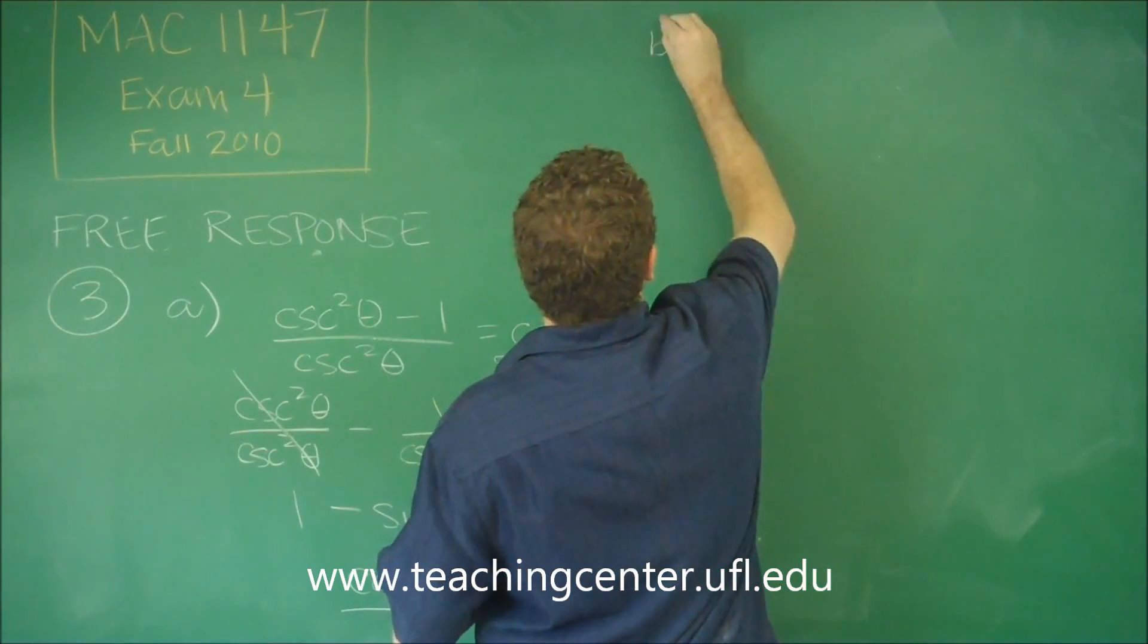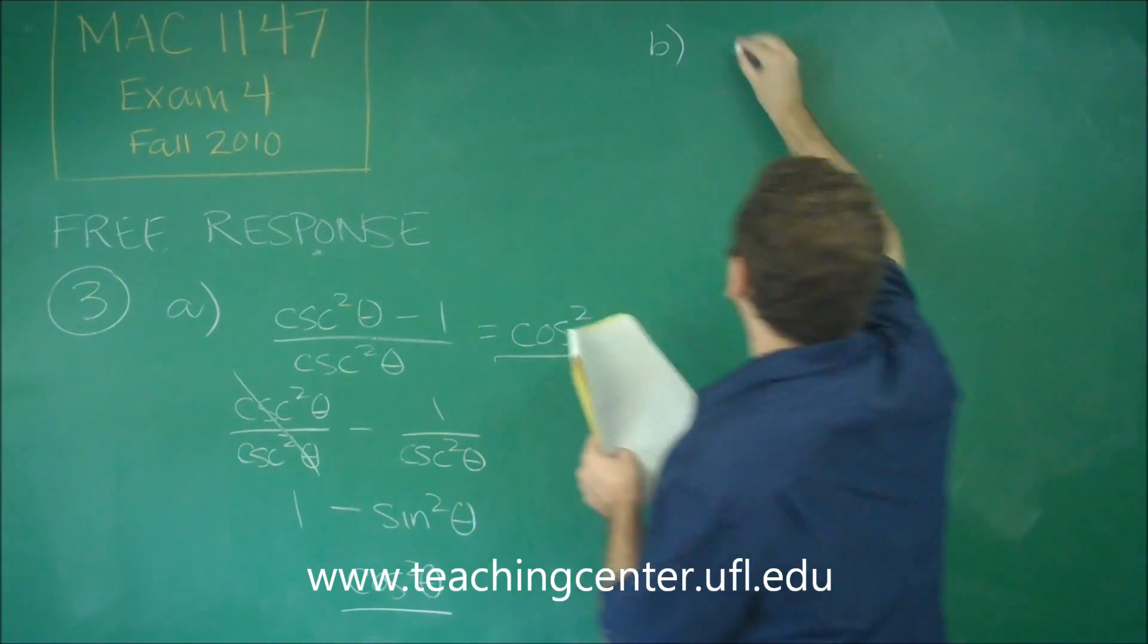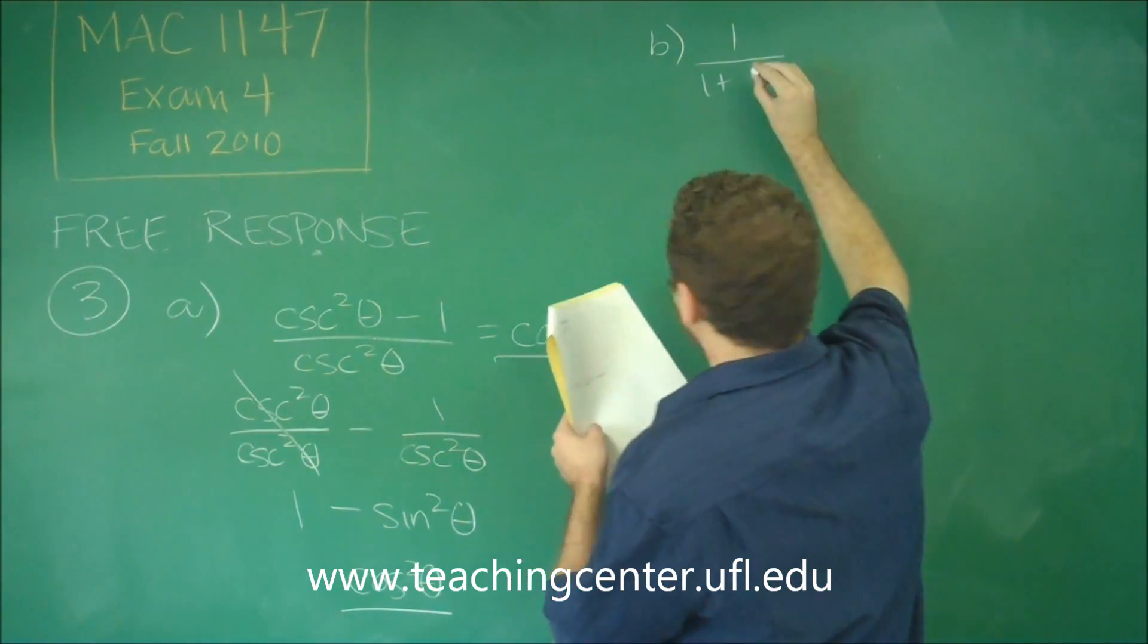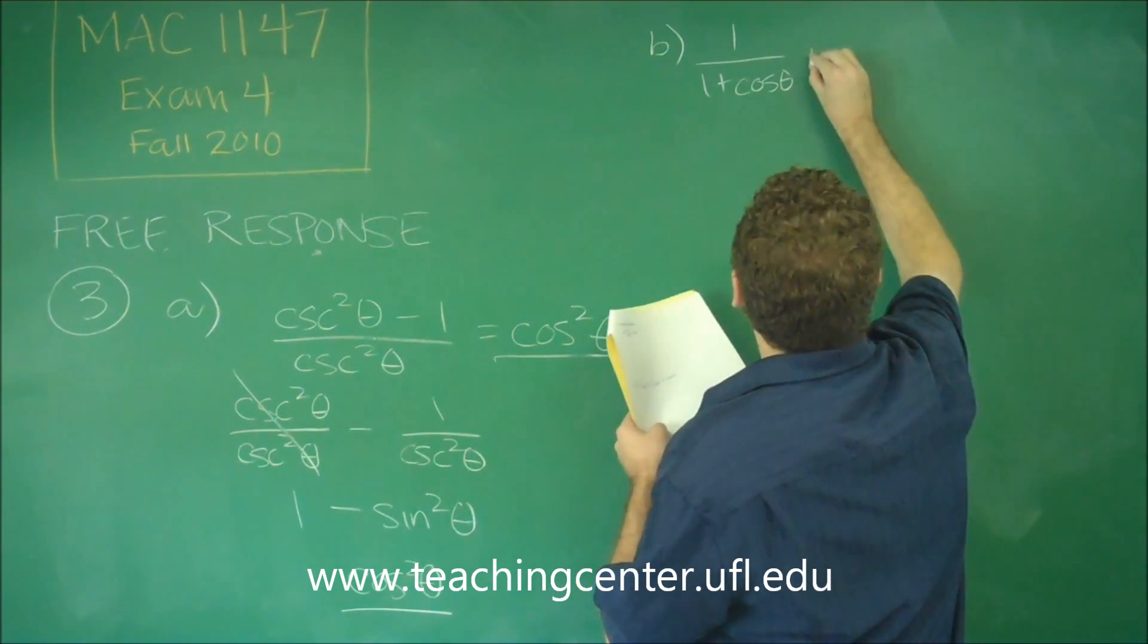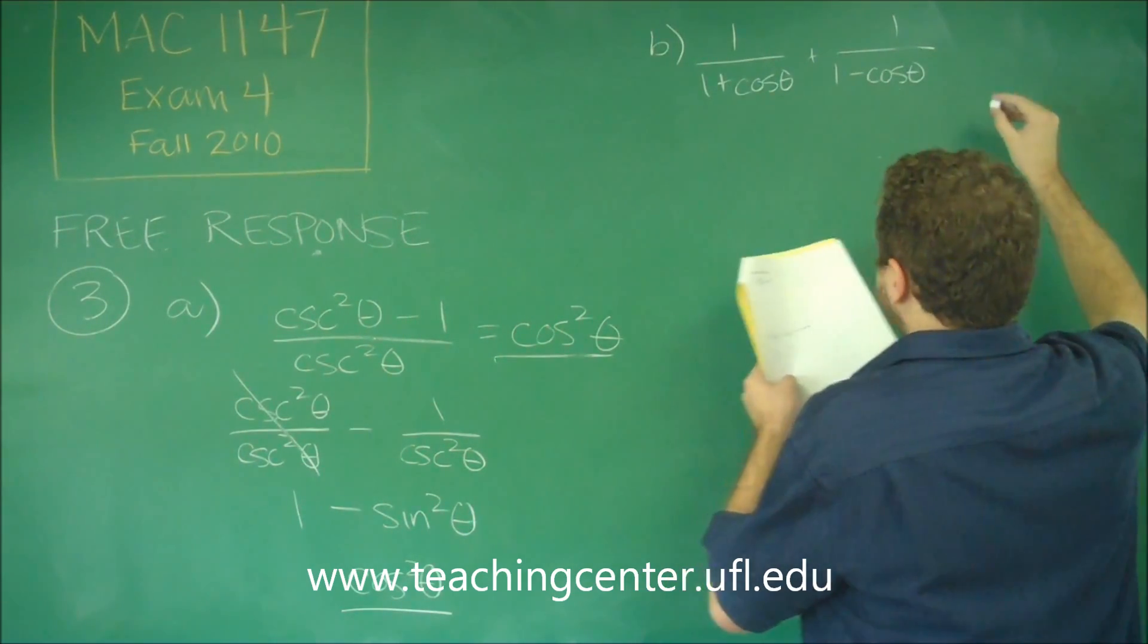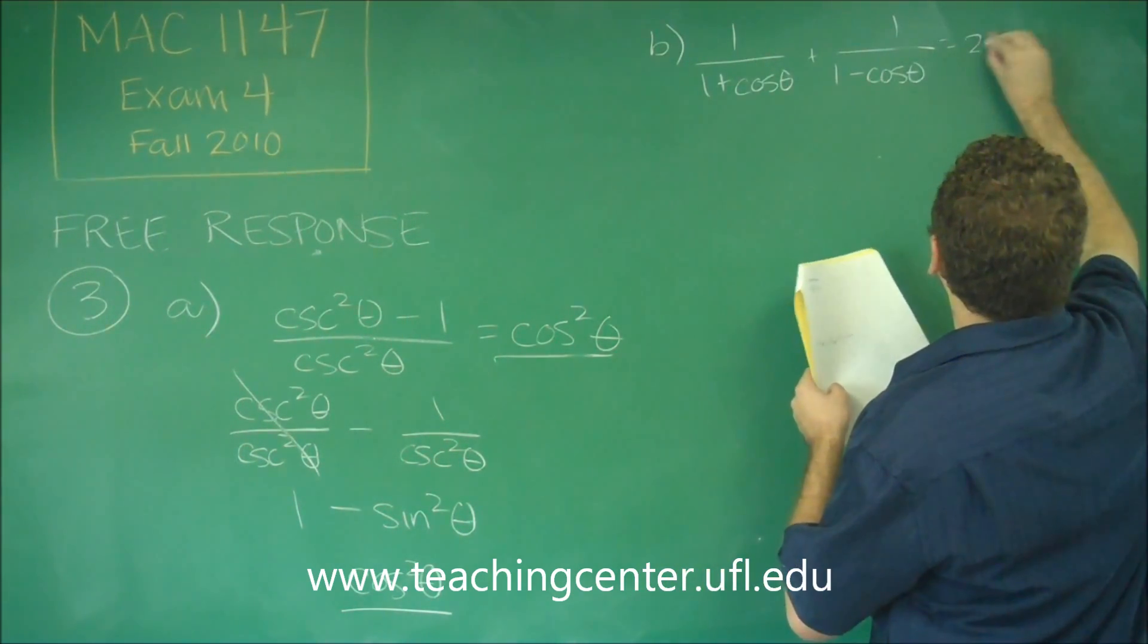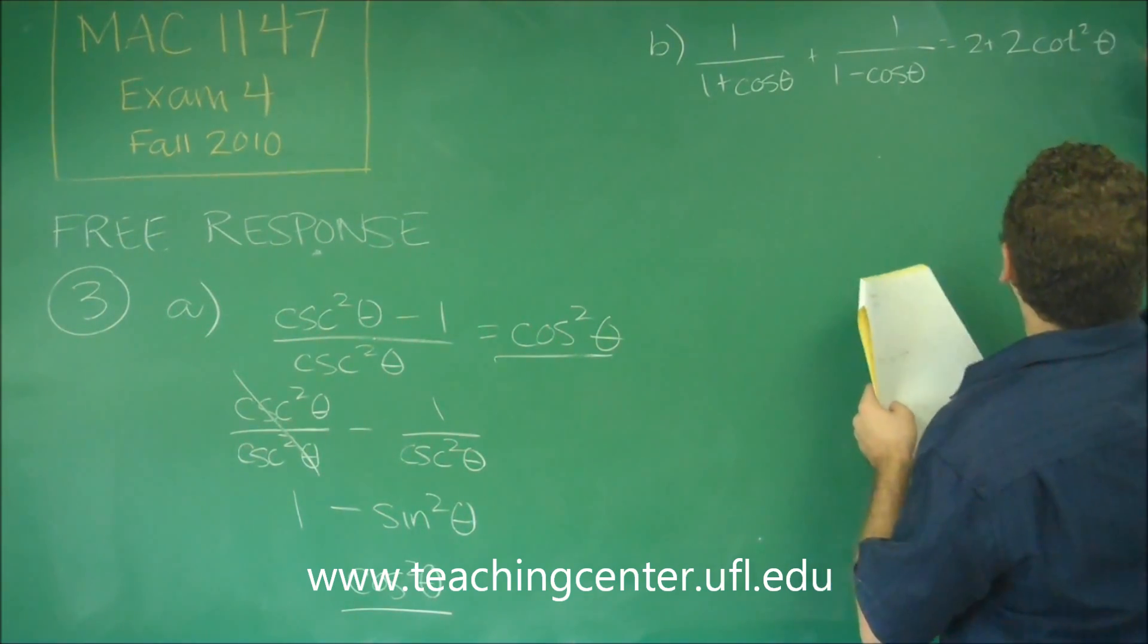For part b, we have one that's a little bit more difficult. So we have one over one plus cosine theta plus one over one minus cosine theta. And we want to show that that's equal to two plus two cotangent squared theta.